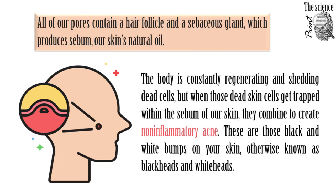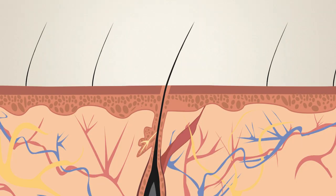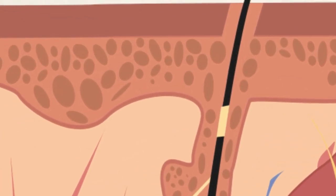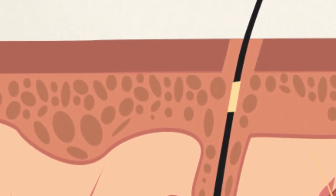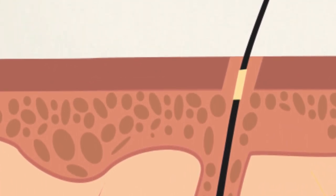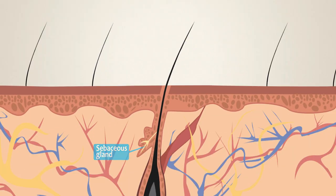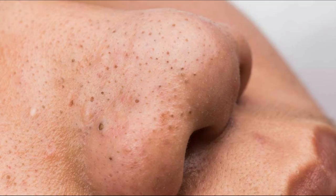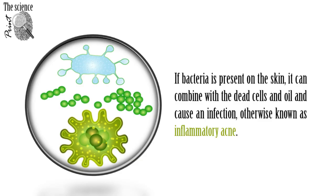All of our pores contain a hair follicle and a sebaceous gland, which produces sebum, our skin's natural oil. The body is constantly regenerating and shedding dead cells, but when those dead skin cells get trapped within the sebum of our skin, they combine to create non-inflammatory acne. These are those black and white bumps on your skin, otherwise known as blackheads and whiteheads.